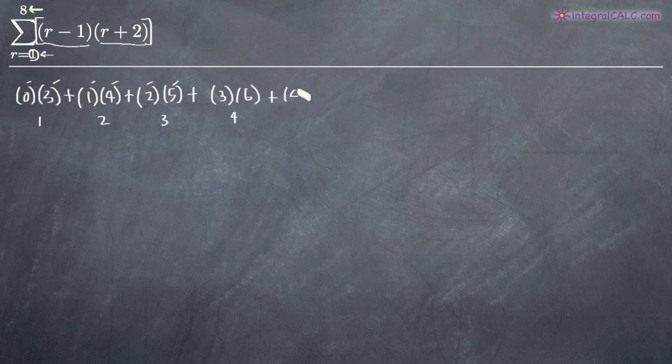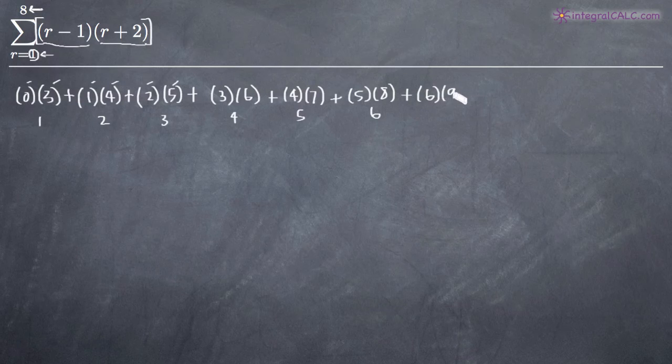Then we're adding one to both of these each time. So it's going to be four times seven plus five times eight, which is what we get when we plug in six, plus six times nine, which is what we get when we plug in seven. And then our last value, which is eight, we get seven times ten.